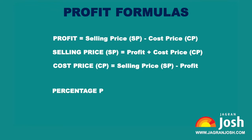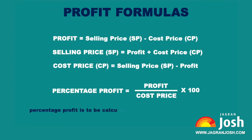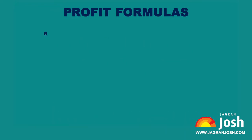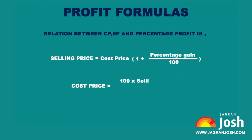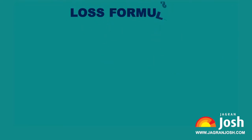Percentage Profit = (Profit / Cost Price) × 100. Percentage profit is to be calculated always on CP unless required. The relationship between CP, SP, and percentage profit is: Selling Price = Cost Price × (1 + Percentage Gain / 100). Cost Price = (100 × Selling Price) / (100 + Percentage Gain).